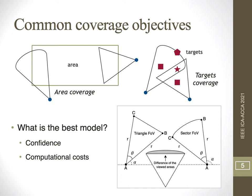There are different coverage objectives, but two are very often considered: area coverage and target coverage. What is the best model to support these coverage objectives? We don't know, but we can evaluate the computational cost of these models to decide, or identify the drawbacks and advantages of each. In this figure, the triangle FOV and the sector FOV define different fields of view, and the difference between them will vary considerably depending on the sensing radius and the view angle.